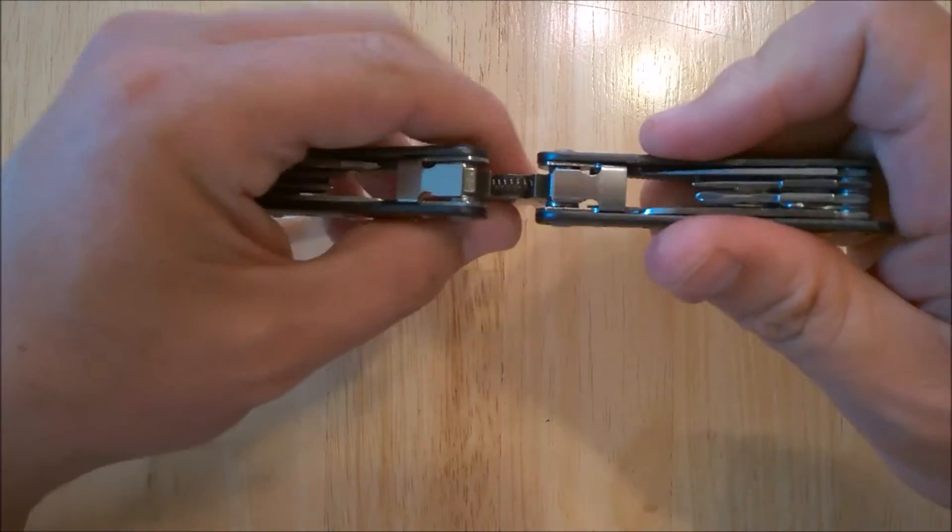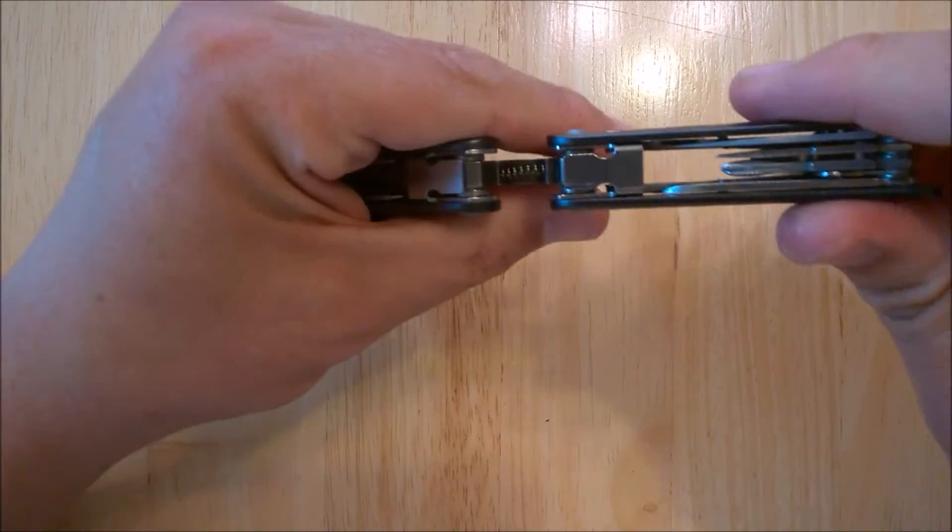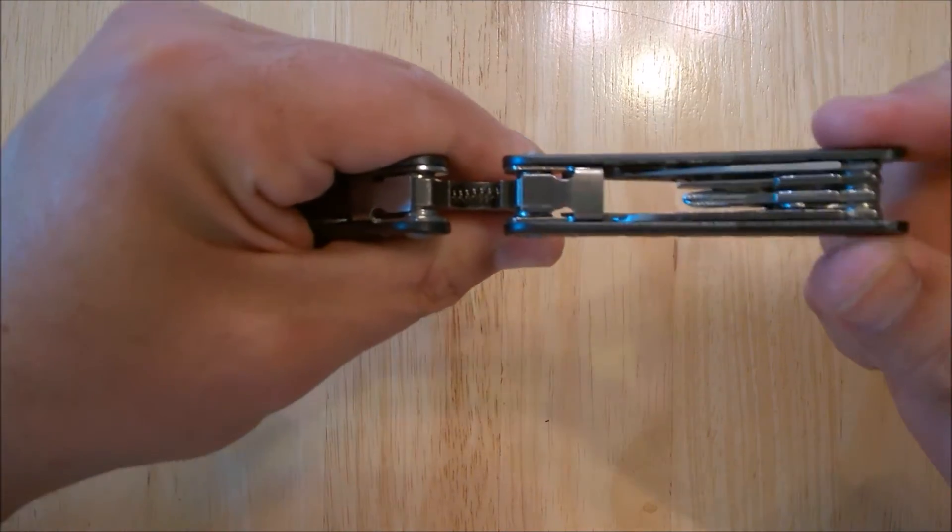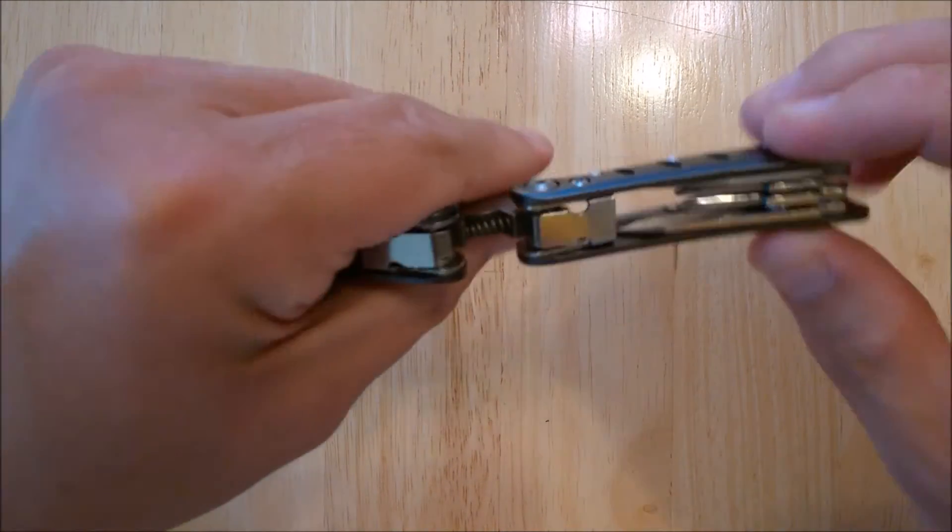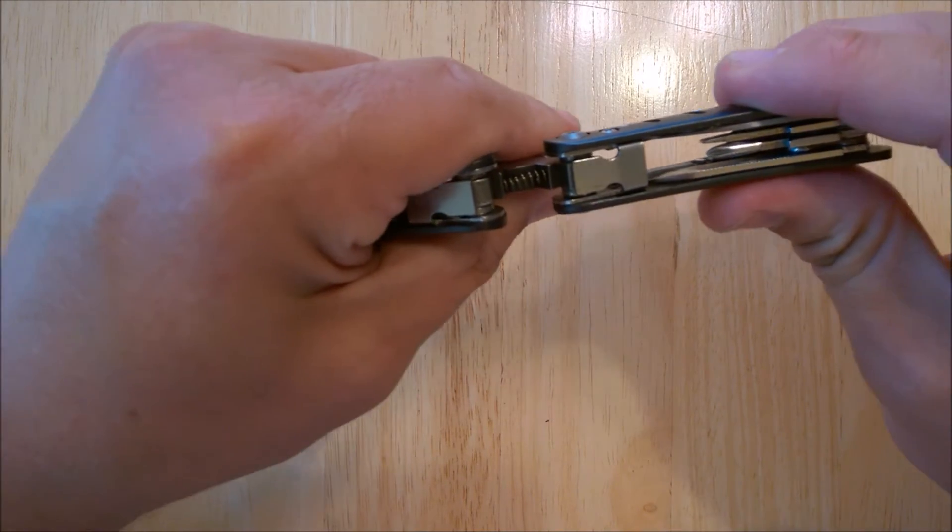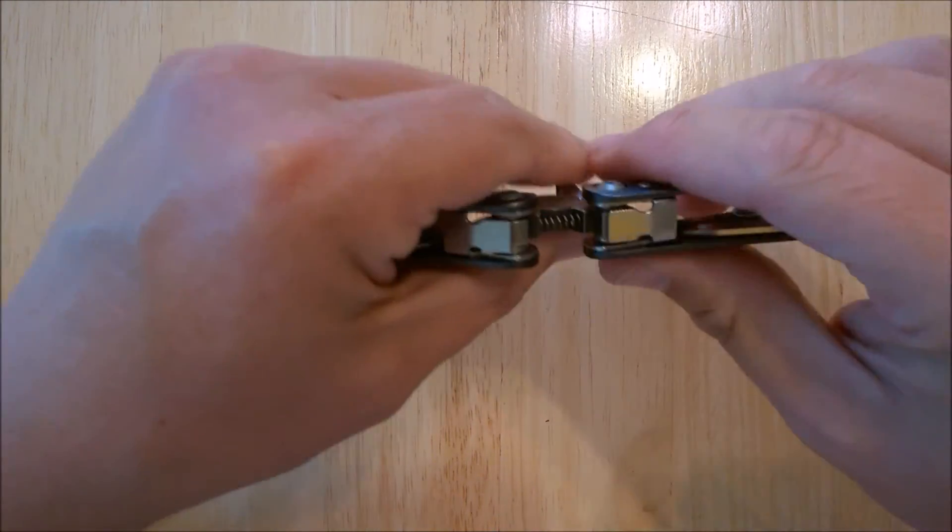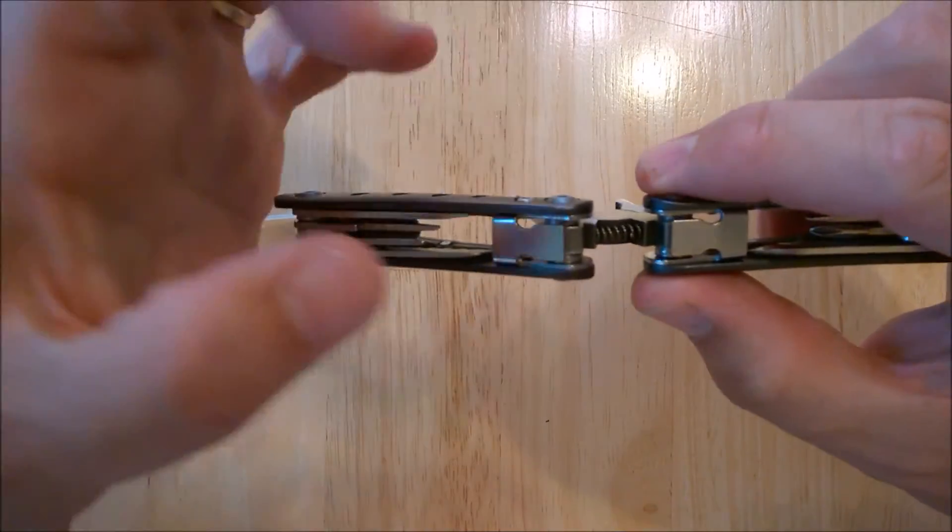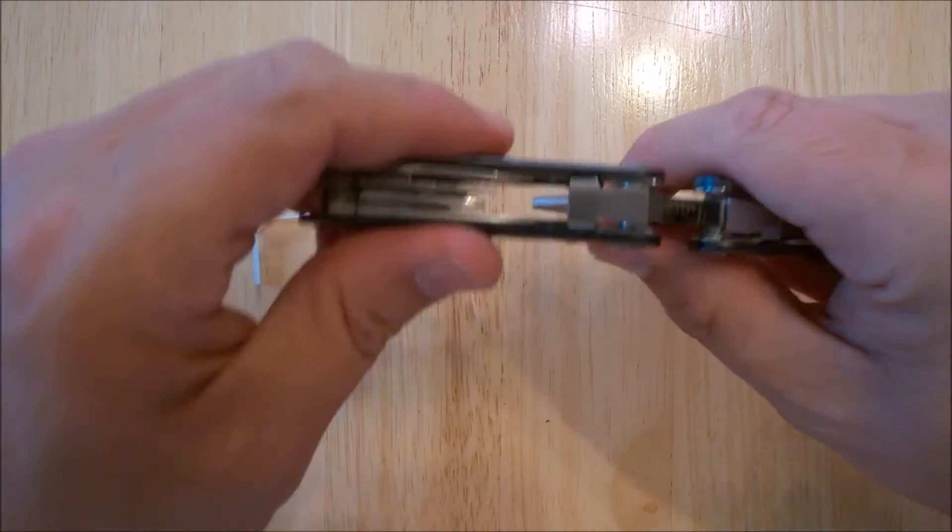If I try to hold it with one hand and move the other one, you know how you do with knives and you try to do side to side play. There's very tiny bit of movement. And I think that's just the flexing of metal, but there's nothing loose or anything in there on both sides. It's nice and snug.